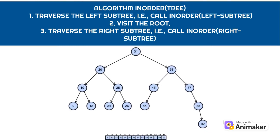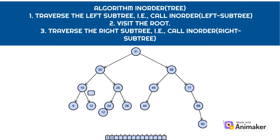Algorithm: in-order tree. 1. Traverse the left subtree. 2. Visit the root. 3. Traverse the right subtree.